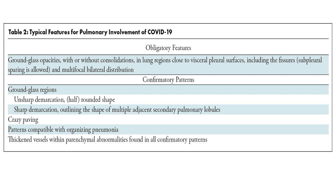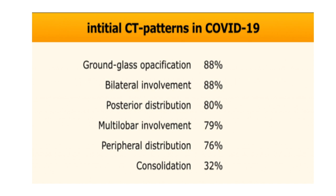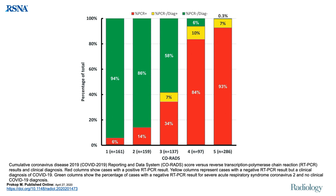The typical features of pulmonary involvement in COVID-19: ground glass opacities with or without consolidations is an obligatory feature, generally found close to visceral pleural surfaces including the fissures. Initial CT patterns show ground glass opacification 88%, bilateral involvement 88%, posterior distribution 80%, multilobar involvement 79%, peripheral distribution 76%, and consolidation only 32%. This bargraph shows CT chest findings correlated with RT-PCR positivity.